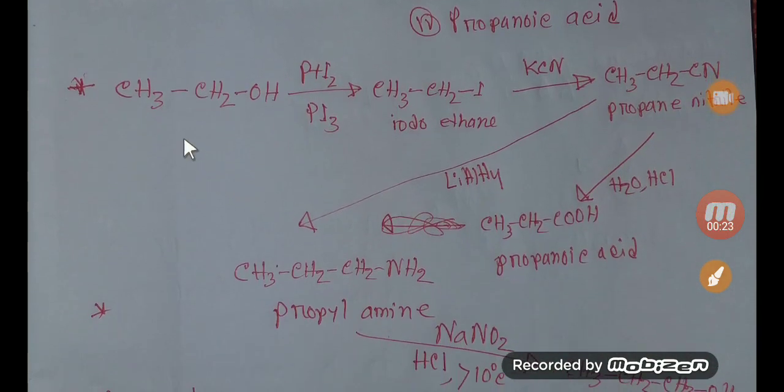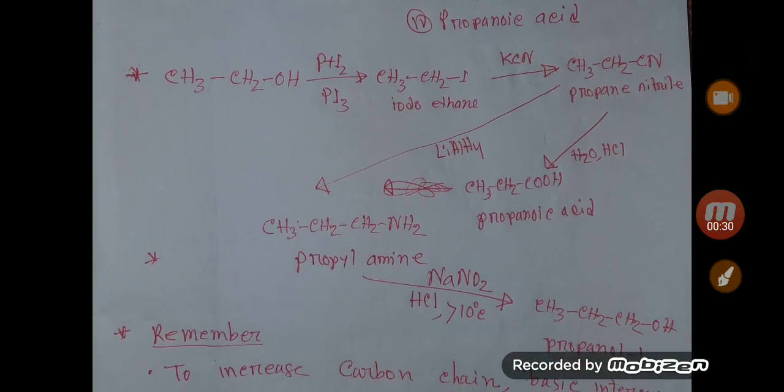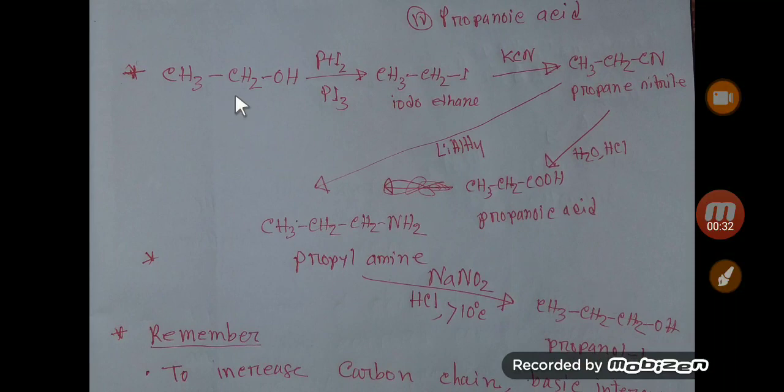Like we want to convert ethanol to propanol. If you observe here, ethanol has two carbons and propanol has three carbons. So how to increase the number of carbons in the chain?